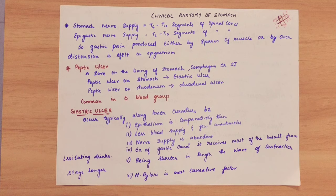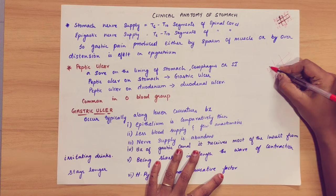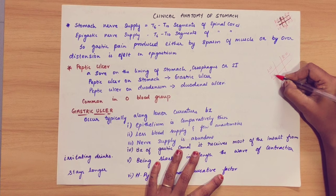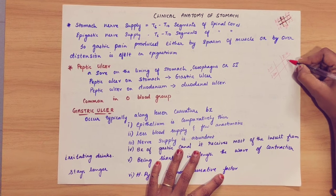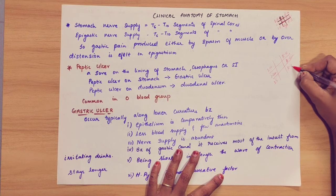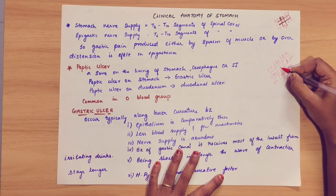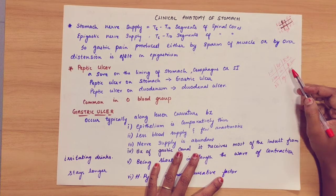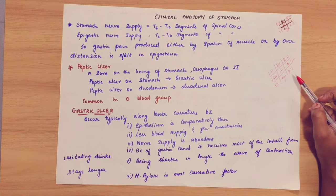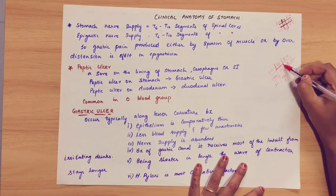Coming to the clinical anatomy of the stomach — this is a very important topic. There are 9 regions: left hypochondrium, right hypochondrium, left lumbar, right lumbar, left iliac region, right iliac region, epigastric region, hypogastric, and umbilical region. In these 9 regions, if there is a problem in the stomach — maybe an ulcer or any stomach-related problem — the pain is felt in the epigastric region.